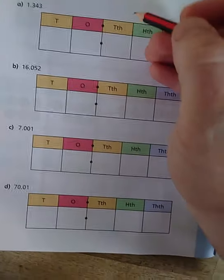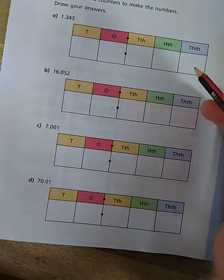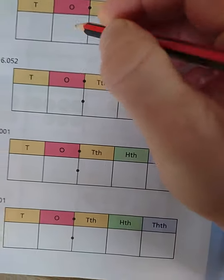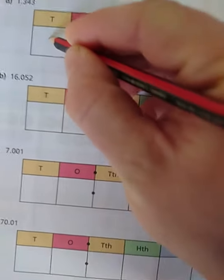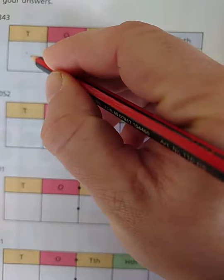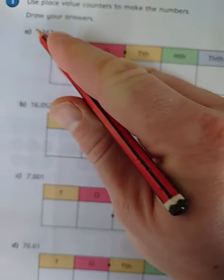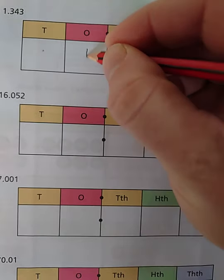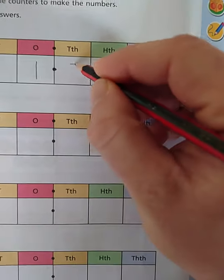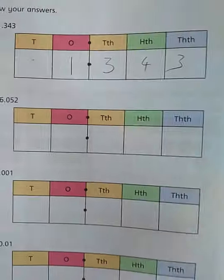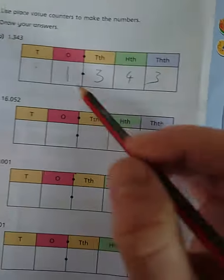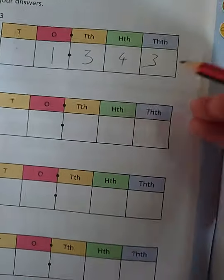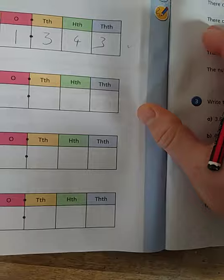Use the place value counter to make the numbers drawn below. Well, the important thing to remember here is that these are the decimals. That's the decimal there. So there is nothing in a tens box. You don't need to write anything in here at all. Because the first digit we have is the number 1. And then 3, 4, 3. So just remember that this number is 1.343 not 1.343. That's really important. And that's all you need to remember.